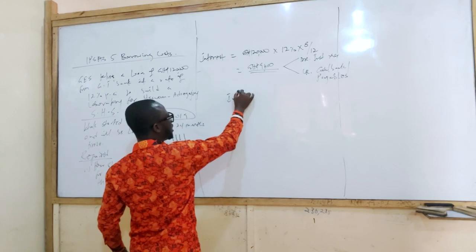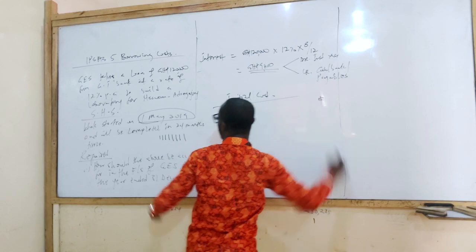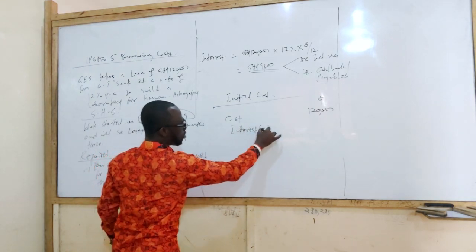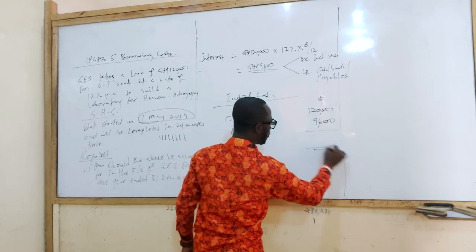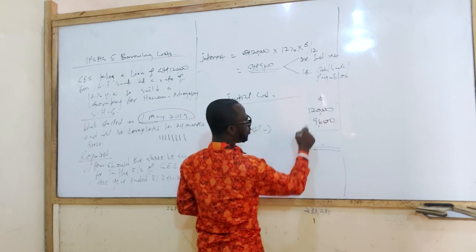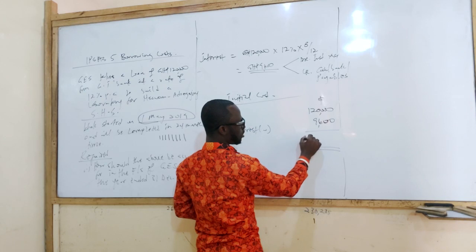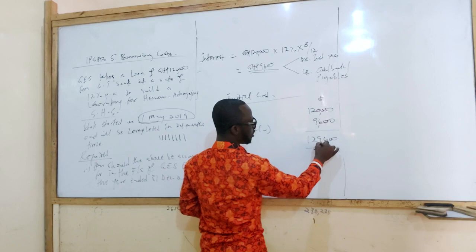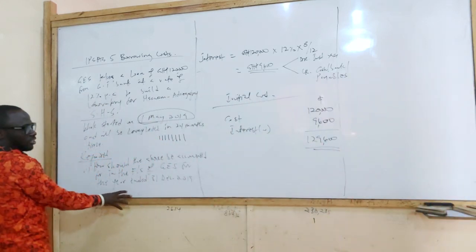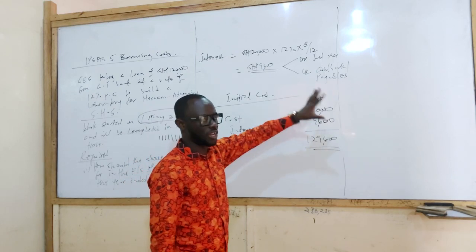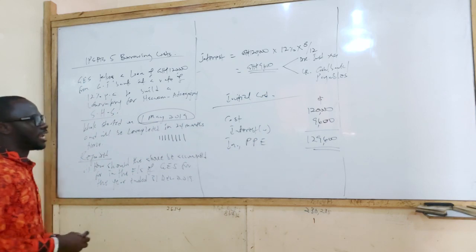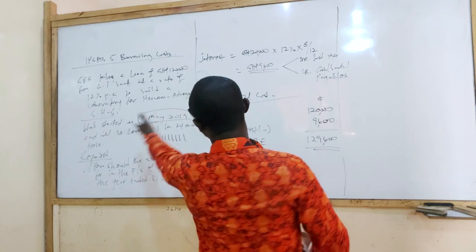So initial cost of this asset is going to be the cost of the construction which is 120,000 Ghana cedis. Make sense? And then the interest from our workings 9,600. So 129,600. Property, plants and equipment. Because sometimes we put all of that together. And laboratory is part of the infrastructure. Road is an infrastructure. So this is how we account for this.